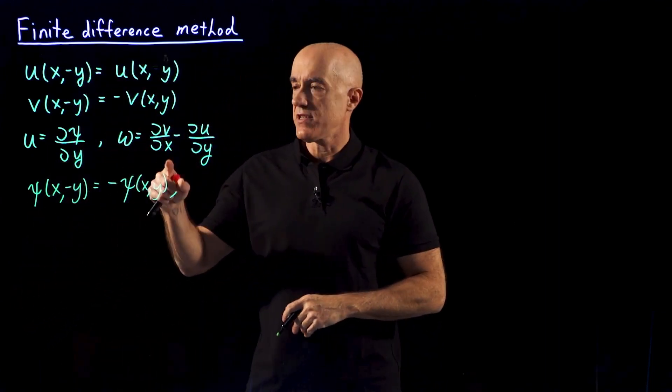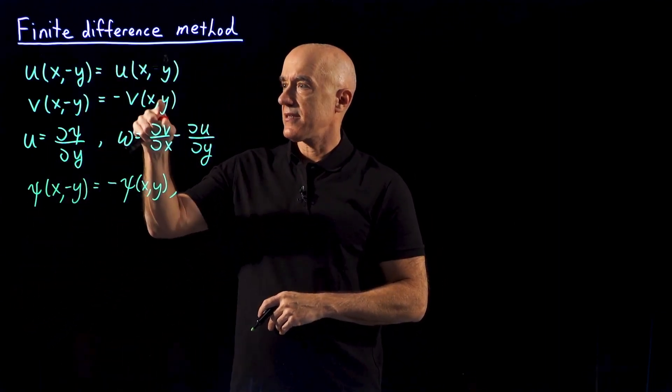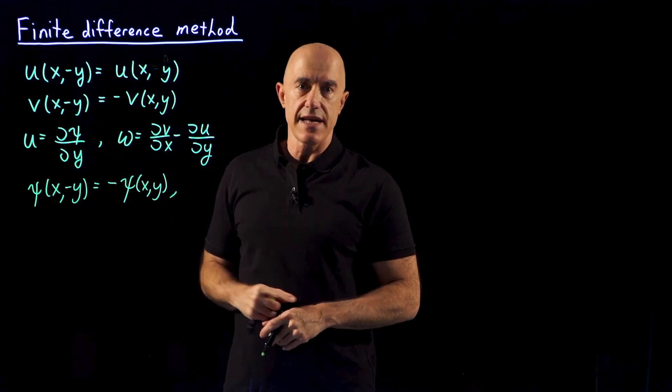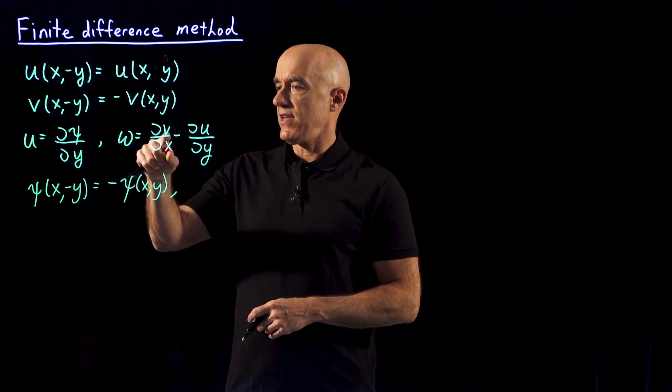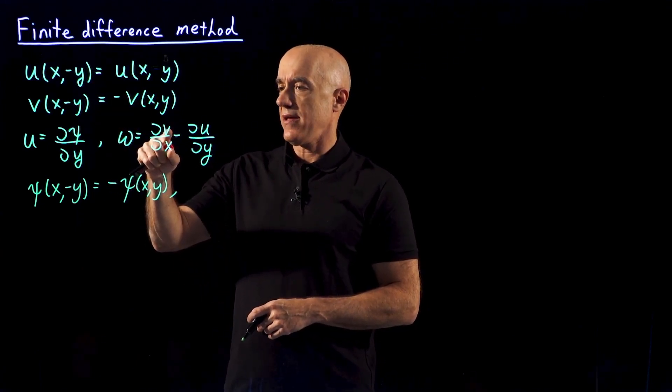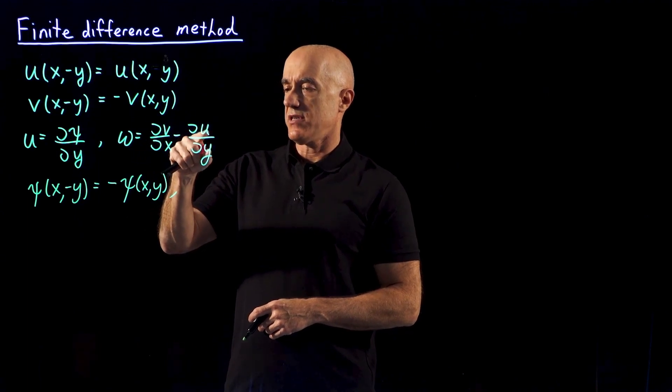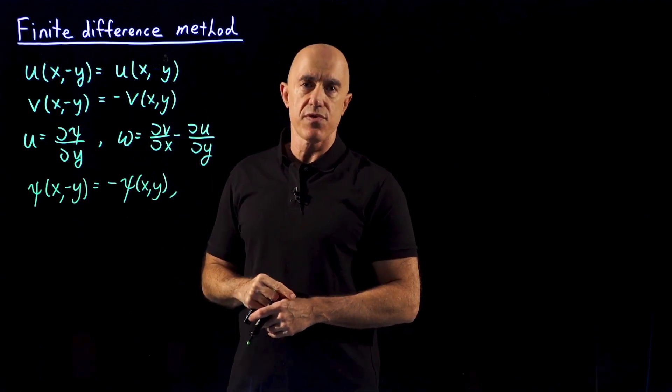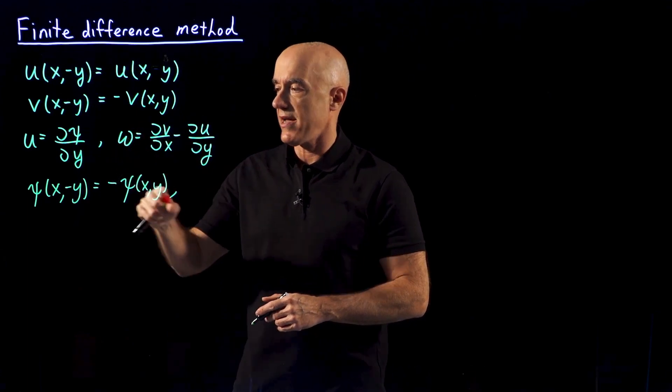If we look at the vorticity now, ξ is not the variable that we're looking at the symmetry in. So v is an odd function in y. U is an even function in y. But the derivative of u with respect to y is an odd function in y.